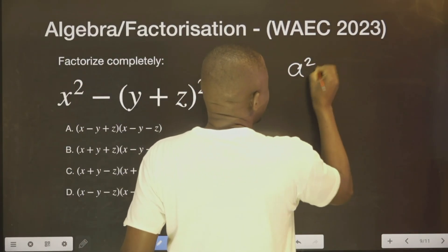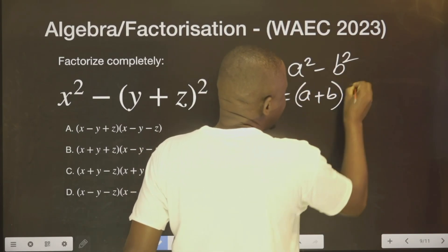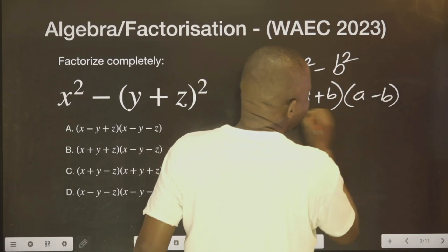This is A. This is B. This is always like this, the difference of two squares.